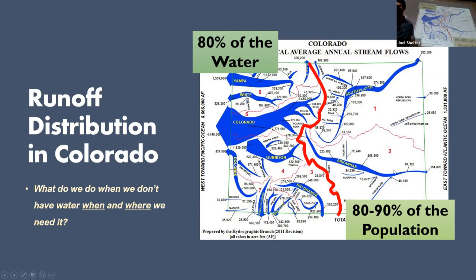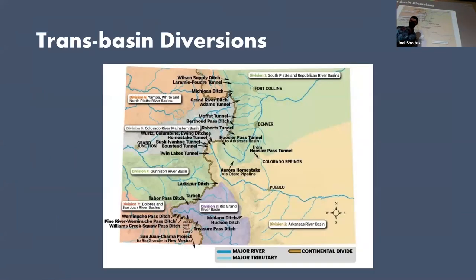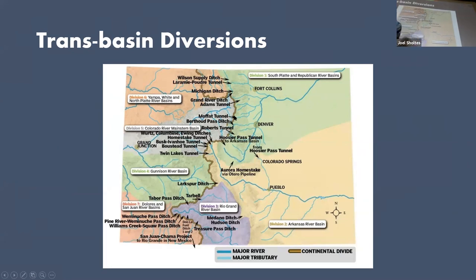All the snow is over here on this side, but all the urban populations are over here on the Front Range. So what do we do when we don't have water where and when we need it? We store it and move it — we move it to where we want it. Here is a map of all the major transmountain diversions, and there are dozens of them. At the very headwaters of the Colorado River in Rocky Mountain National Park, at the very top of that basin is a huge ditch called the Grand Ditch. It just blasts through the divide — it's an open ditch that takes all the water from the headwaters and ships it over into the Poudre River.